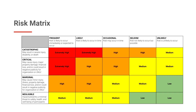The top of the matrix asks you to identify the likelihood that negative outcomes may occur. The left side of the matrix asks you to determine the severity of potential outcomes. As you identify each element of your planned event, use the matrix to identify the level of associated risk as either low, medium, high, or extremely high.